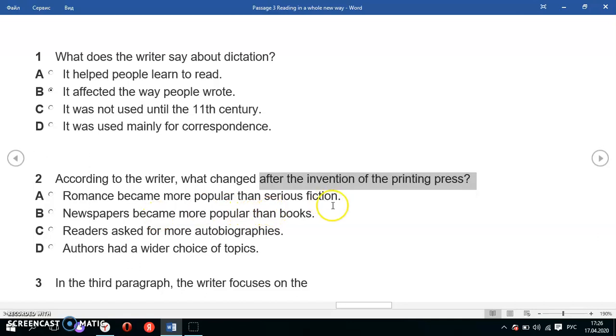Romances became more popular than serious fiction - they give some information about love stories but didn't say it was more popular, so this option is out. Newspapers became more popular than books - no, there isn't any comparison. Readers asked for more autobiographies - we have information about autobiographies but no clue that readers started asking about it. Option D: Authors had a wider choice of topics - that's exactly the correct answer. The text says writers had different things to write about: love stories, autobiographies, because of the mass publication of books. Correct answer D.